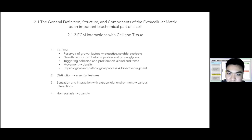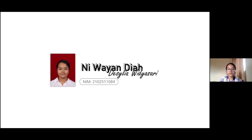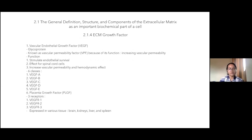The extracellular matrix is the main component in directing homeostasis of tissue or cell, by providing essential biochemical and biophysical signals that keep cells or tissue in a balanced state. My name is Nguyen Deseviyasari, with the last three digits of NIM 084. I will explain about extracellular matrix growth factors.